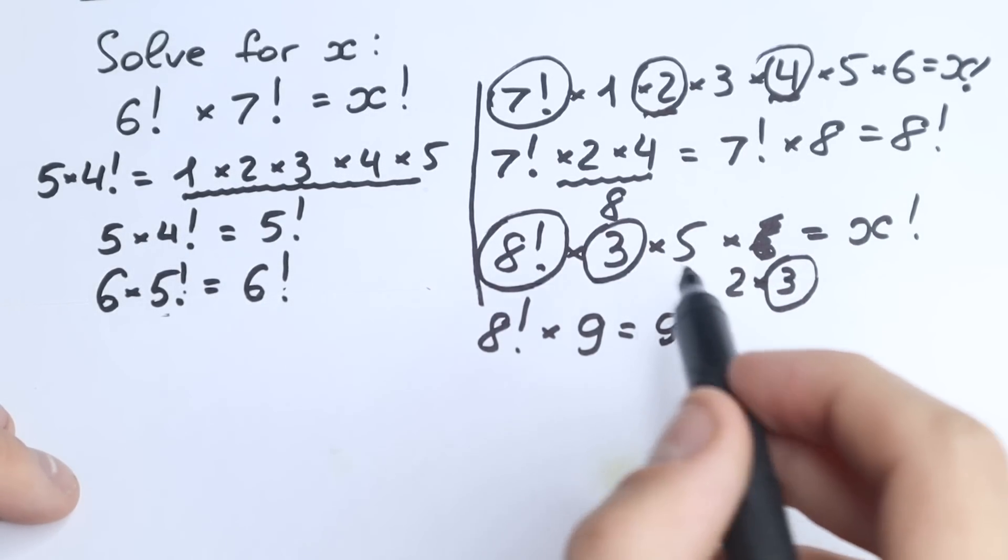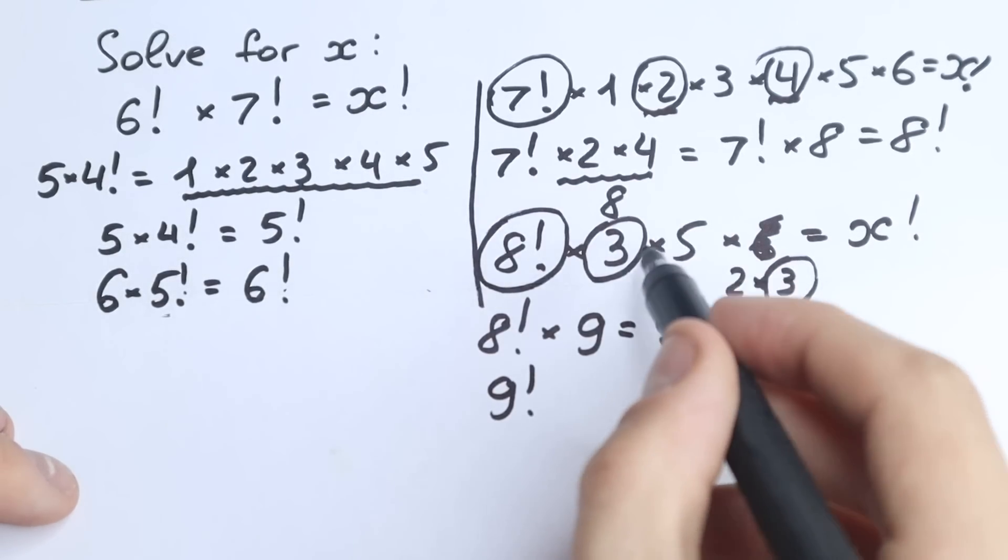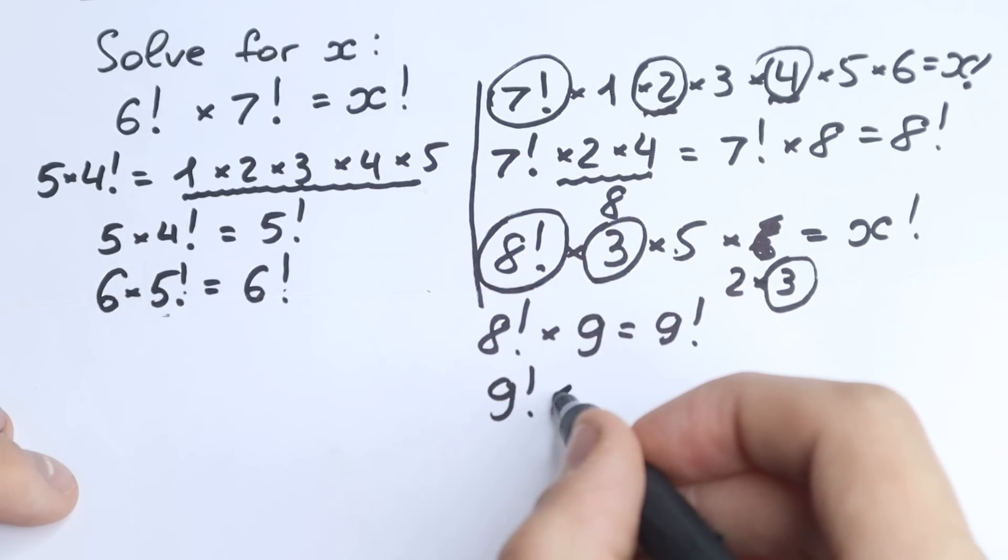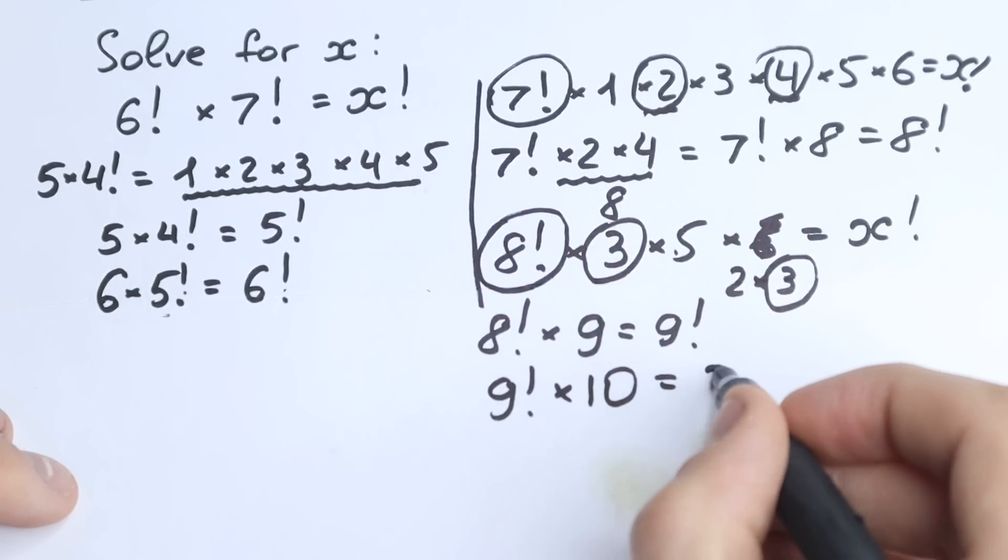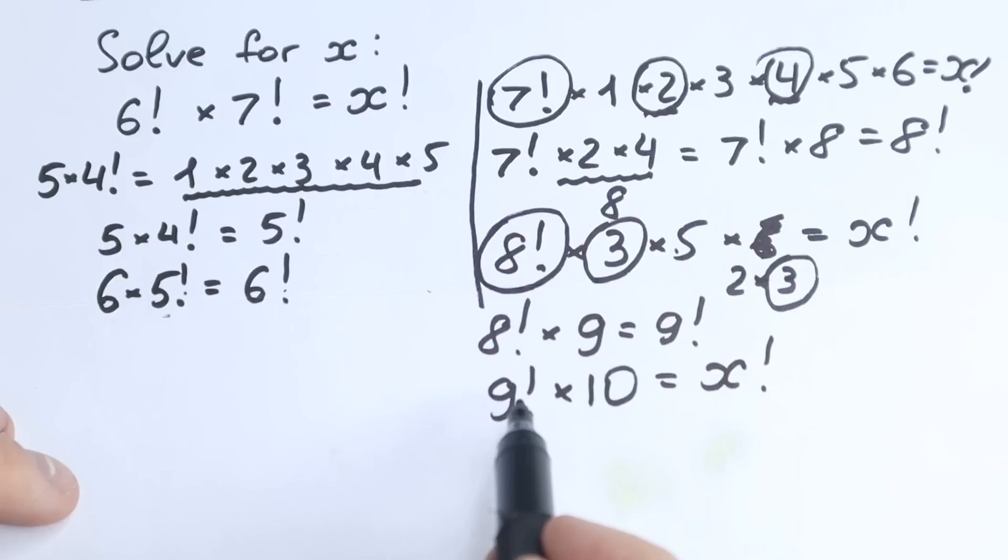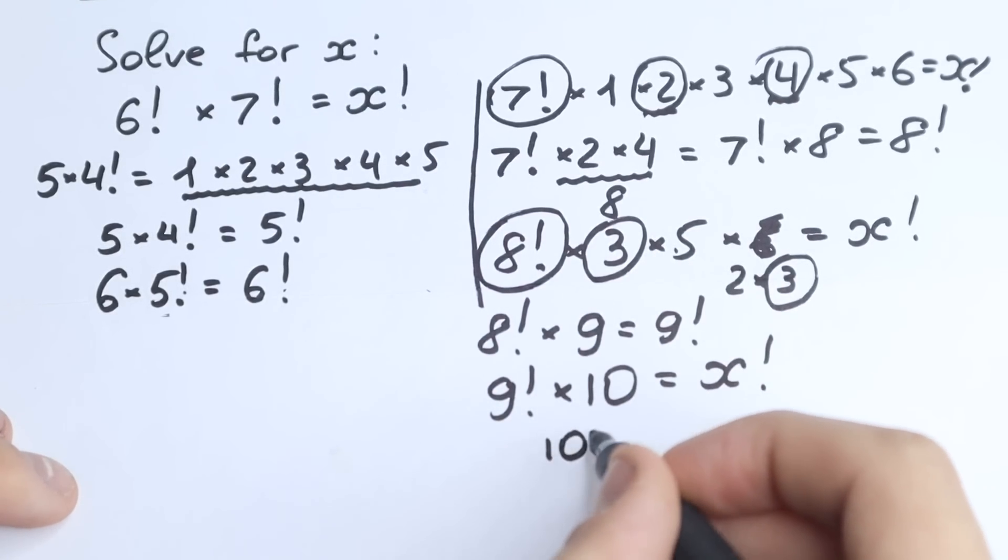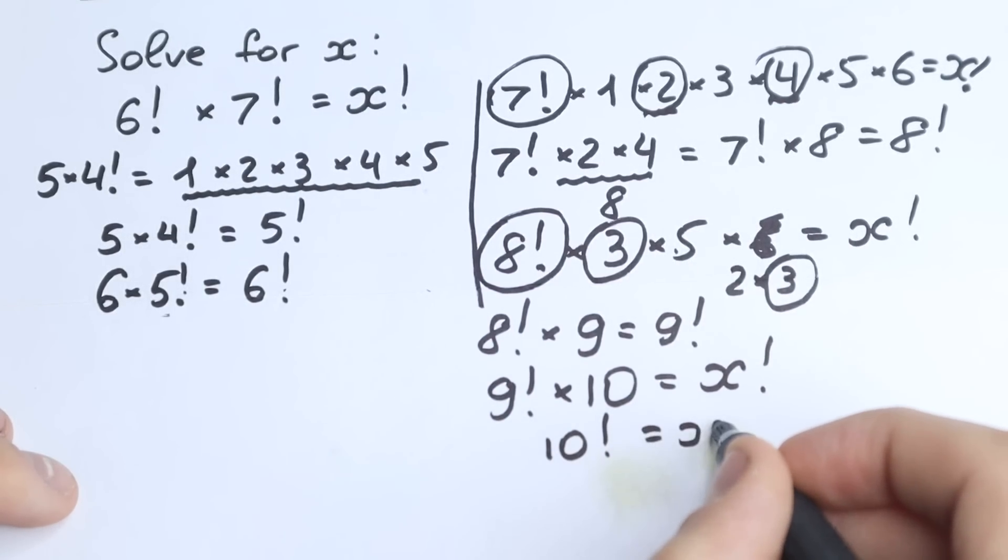And let's look at what we still have. So instead of these values, we have 9 factorial. We still have 5 and 2. So times 10 equal to x factorial. This is a classic formula. 9 factorial times 10 equal to 10 factorial. So we have 10 factorial on the left hand side equal to x factorial.